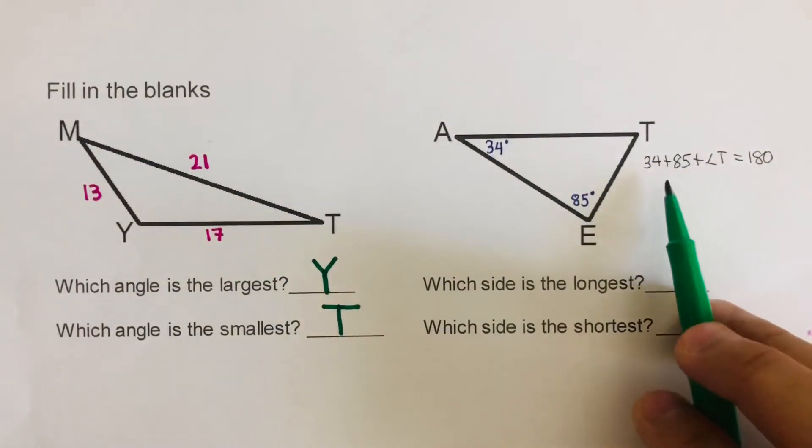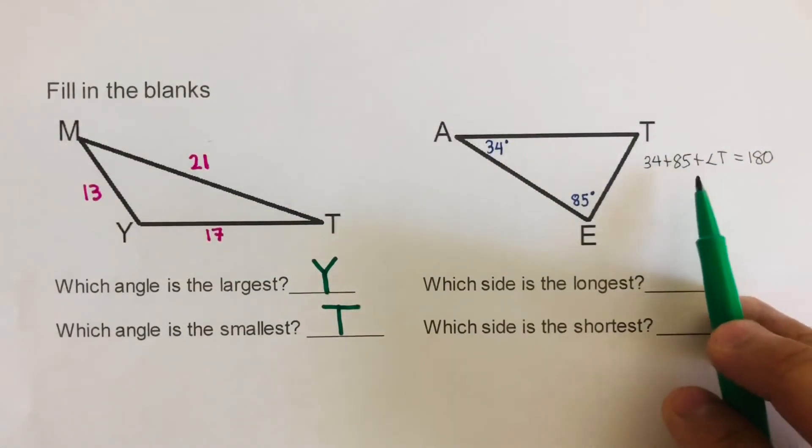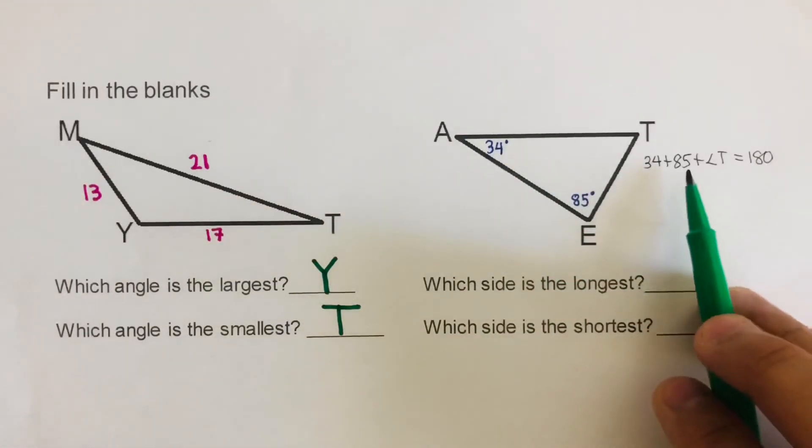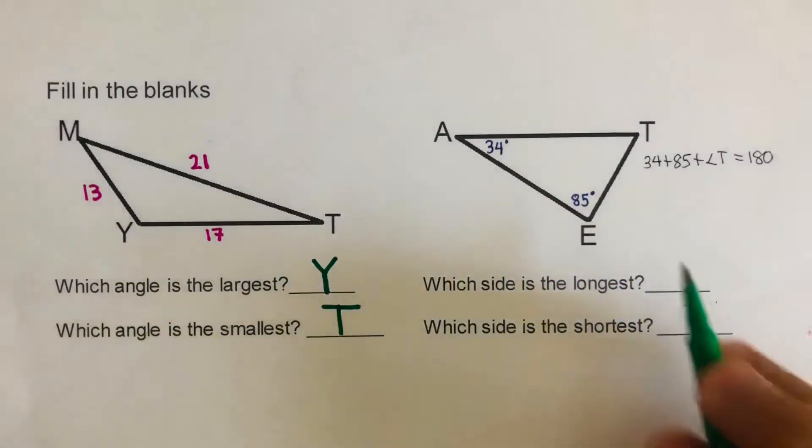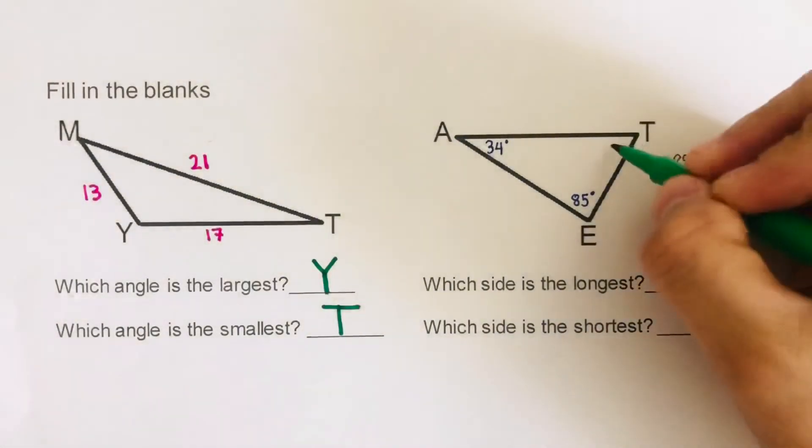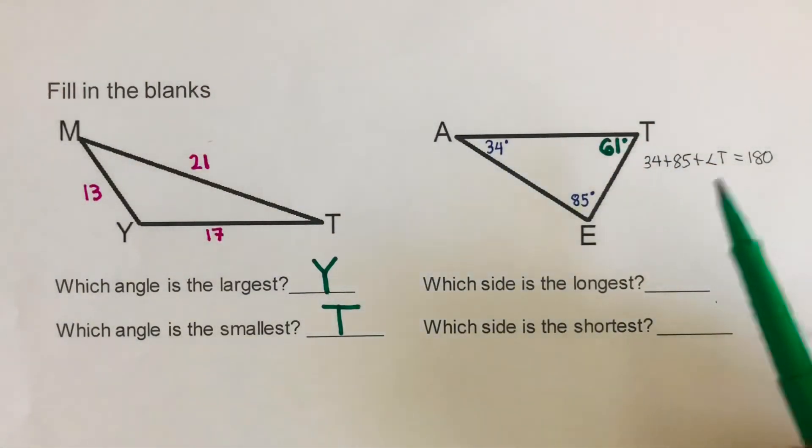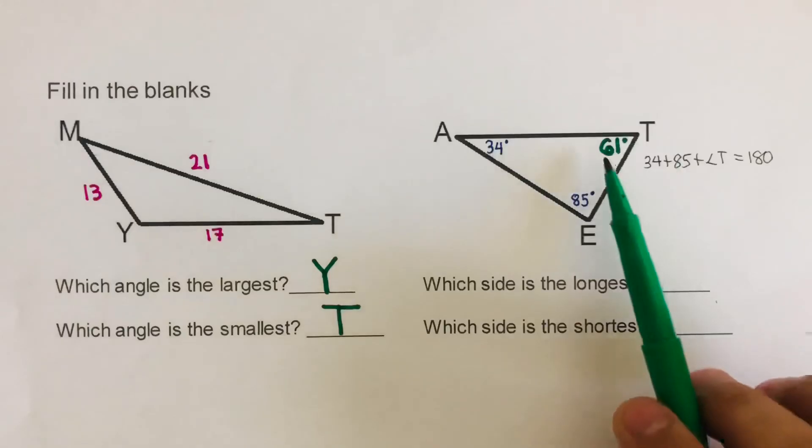So again, there is a separate video for this, how to find the missing angle of a triangle. I will put the link of that video in the description box below. So this is actually 61. If you do the math on that, you are more than welcome to go back and see that video on how I got the 61.